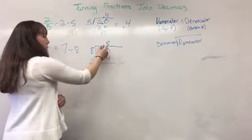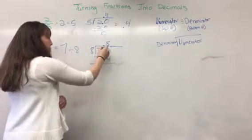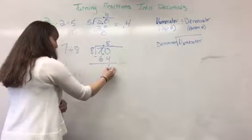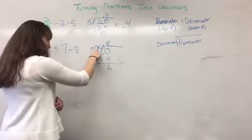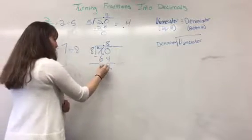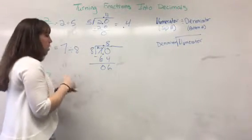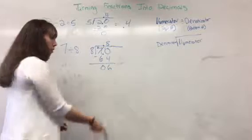70 minus 64. Well, 0 can't be minus by 4, so we have to make that a 10. 10 minus 4 is 6. 6 minus 6 is 0. Well, let's look at this. We're not at 0 yet. We still have the 6.